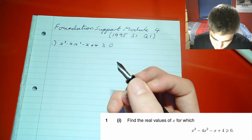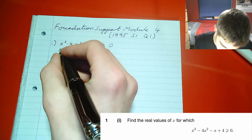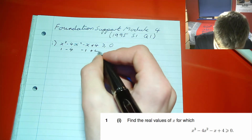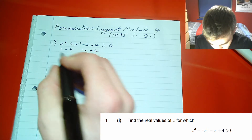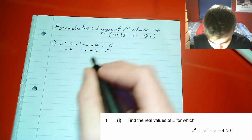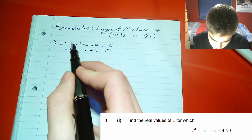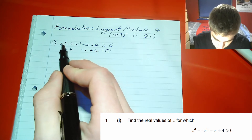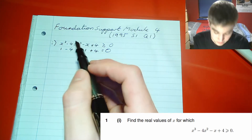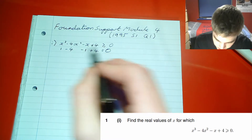The next value we try is one, and that looks promising. Substituting one in: one minus four minus one plus four. The fours cancel and the ones cancel, giving zero — negative five from the middle terms and positive five from the outer terms. So x equals one solves the equation.